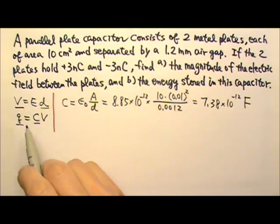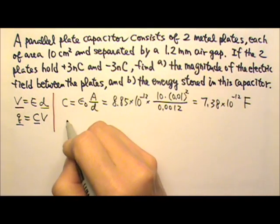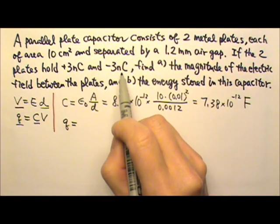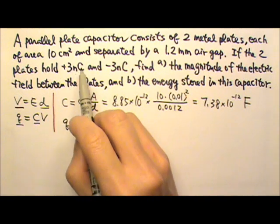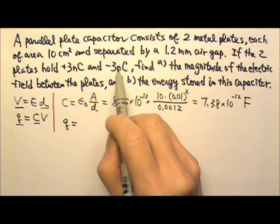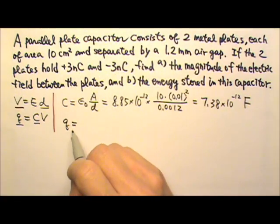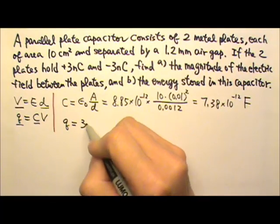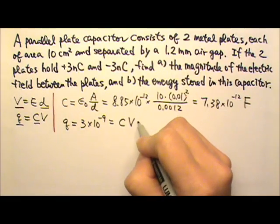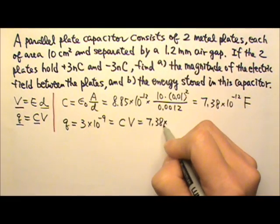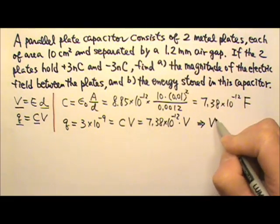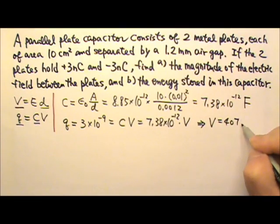Now we have the capacitance that I can use the Q equals CV to find the voltage. The charge is 3 nanocoulombs. There's one plate carries positive Q, the other plate carries negative Q. We never add those two together, because if we add them, we'll always get 0. So the charge Q is 3 nano, 3 times 10 to the negative 9th. And that equals to C times V, and C is 7.38 times 10 to the negative 12th. And so we can find the voltage V, that is 407 volts.